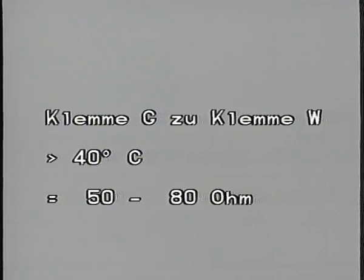Als nächstes testen wir, ob der Thermozeitschalter richtig arbeitet. Er wird durch Messung des elektrischen Widerstandes geprüft. Die Messergebnisse sind abhängig vom jeweils verbauten Thermozeitschalter. Folgende Werte müssen erreicht werden: Klemme G zum Gehäuse bei Temperatur über 40 Grad: 100 bis 200 Ohm. Klemme W zum Gehäuse bei Temperatur über 40 Grad: 100 bis 300 Ohm. Klemme G zu Klemme W bei Temperatur unter 30 Grad: 35 bis 55 Ohm. Klemme G zu Klemme W bei Temperatur über 40 Grad: 50 bis 80 Ohm.